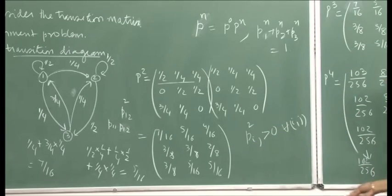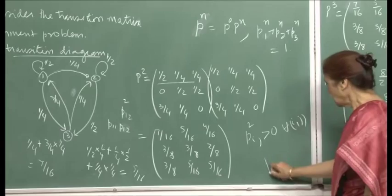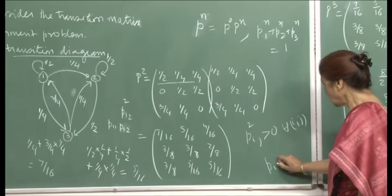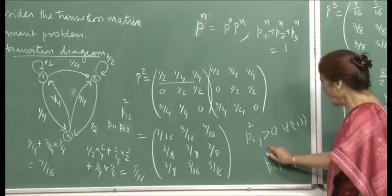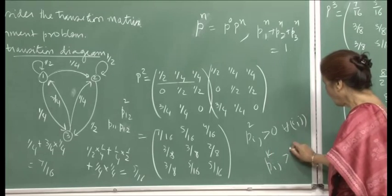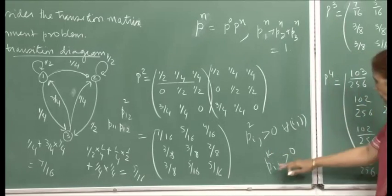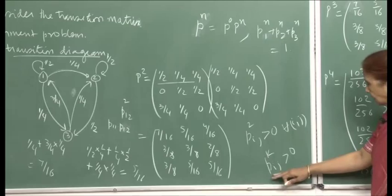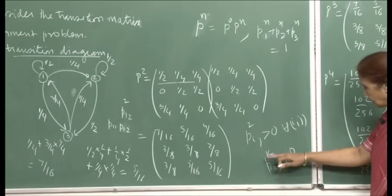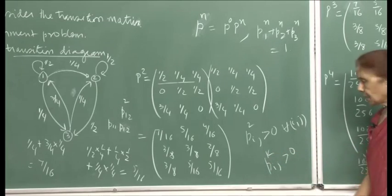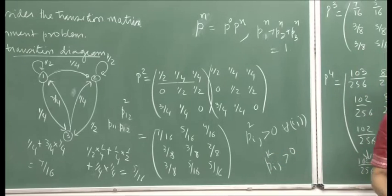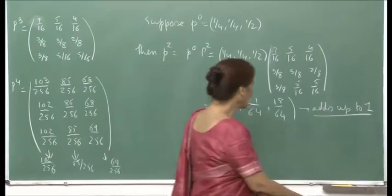The moment all entries of p⁽²⁾ are positive, this shows that p_{ij}^{(2)} is positive for all i, j. This immediately means there is a two-step path from every state to every other state. The word for this is 'communicate' — all states communicate with each other, at least in two steps. In some other example, if there is some k for which p_{ij}^{(k)} is positive, then there is a k-step path from every state to every other state.